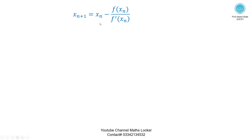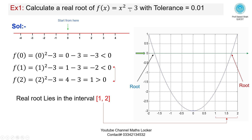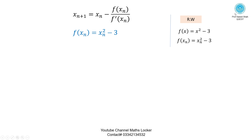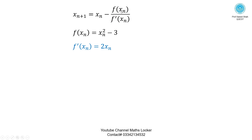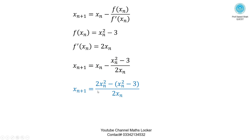Using the Newton-Raphson formula: xₙ₊₁ = xₙ - f(xₙ) / f'(xₙ). With f(x) = x² - 3, replacing x by xₙ: f(xₙ) = xₙ² - 3. Differentiating: f'(xₙ) = 2xₙ. Substituting into the formula and simplifying after taking the LCM, we get: xₙ₊₁ = (xₙ² + 3) / (2xₙ).